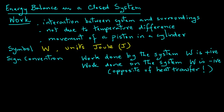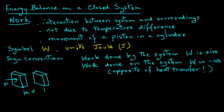Let's consider this slab and look at work done on the system. If we apply a certain force on this slab and move it by a certain distance ds, then the work done on the system is W equals minus F times ds, which reflects our sign convention since the work is done on the system.